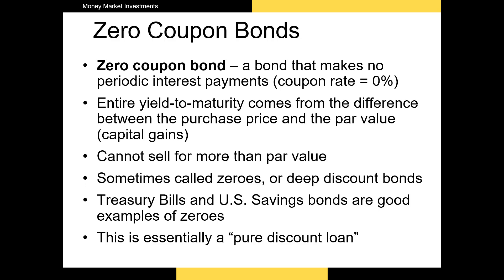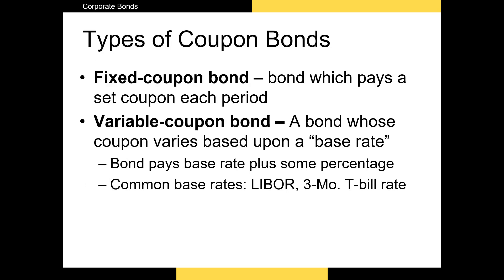Zero-coupon bonds, as the name implies, make no coupon payments to the bondholder. If you buy one of these bonds, you buy it at a discount on the face value, and then over time the value of the bond appreciates to the face value. We sometimes call these zero-coupon bonds 'zeros' for short. Every zero is a pure discount loan, meaning you pay less for the bond than you receive at maturity. Fixed coupon bonds pay the same coupon payment every period, while variable coupon bonds pay a coupon based on some base rate — the most common being LIBOR.